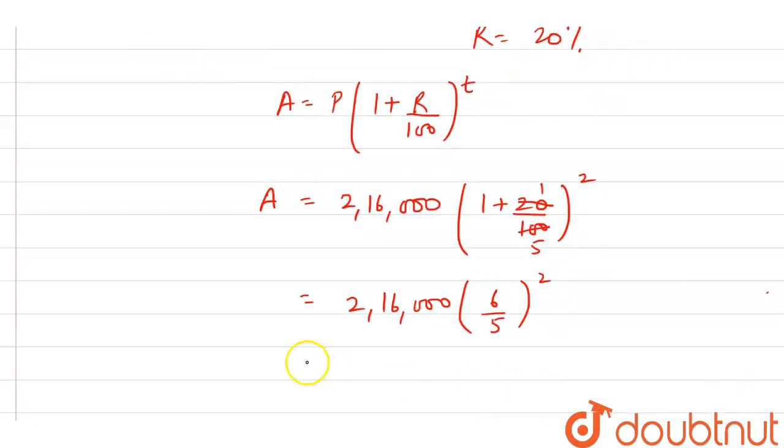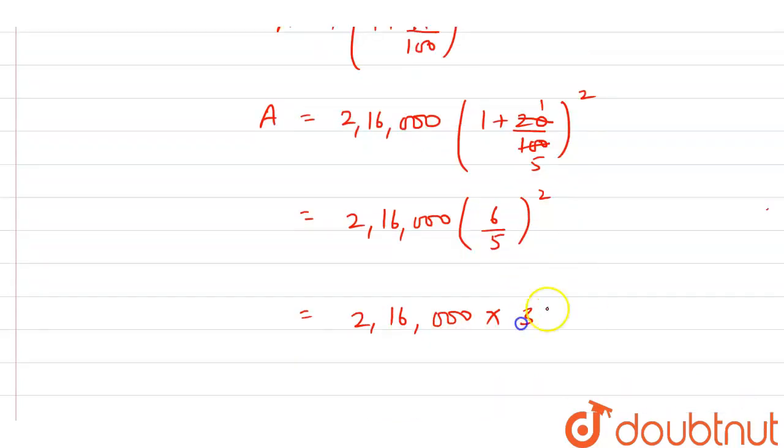Solving further, this becomes 2,16,000 times 36/25. After cancellation...